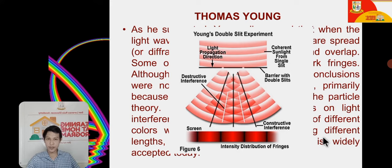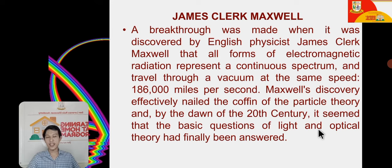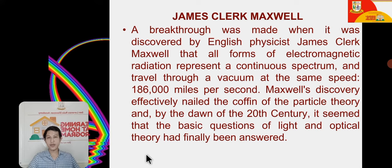Young's findings confirmed that light has wave characteristics. He was supported by James Clerk Maxwell, who identified what we call the electromagnetic spectrum, showing that light is divided into different wavelengths: radio waves, microwaves, infrared, visible light, ultraviolet, x-rays, and gamma rays. This seemed to settle the question in favor of the wave theory of light.